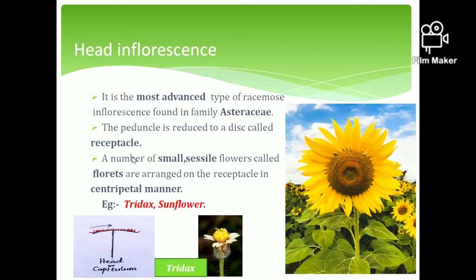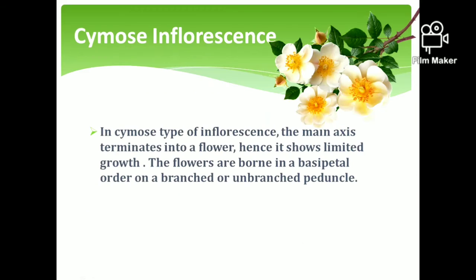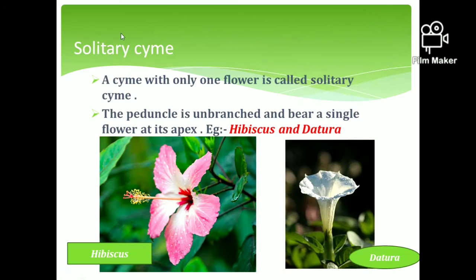The next one is the cymose type of inflorescence. In cymose inflorescence, the main axis terminates in a flower. This type of inflorescence has limited growth, and the flowers are arranged in a basipetal manner. The inflorescence can be either branched or unbranched, and there are different types of cymose inflorescence.